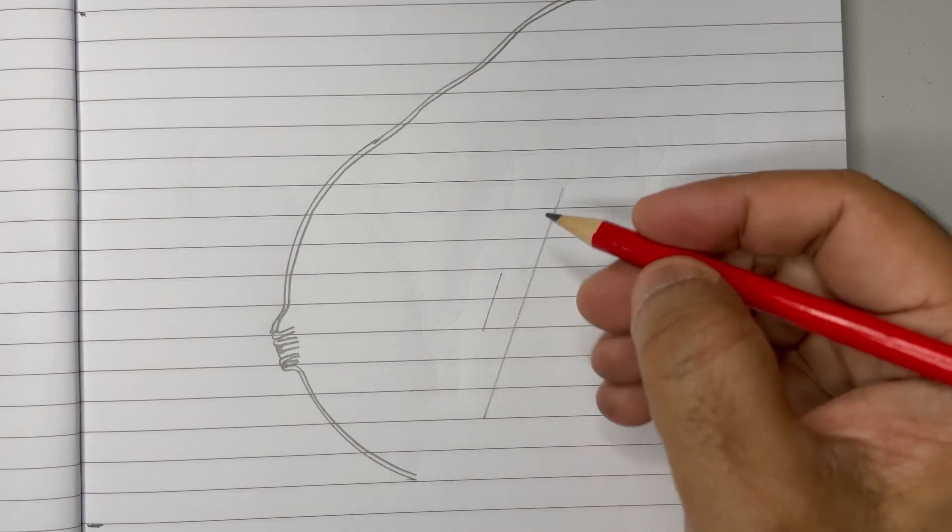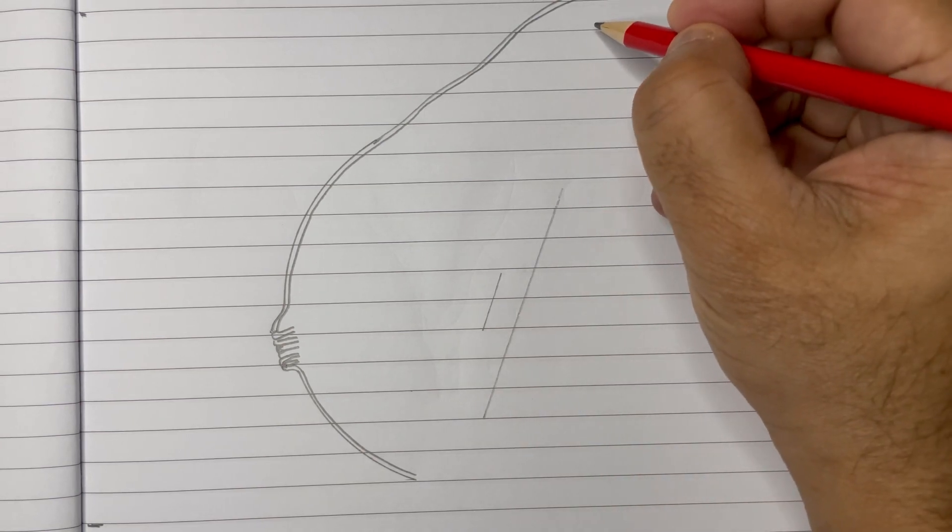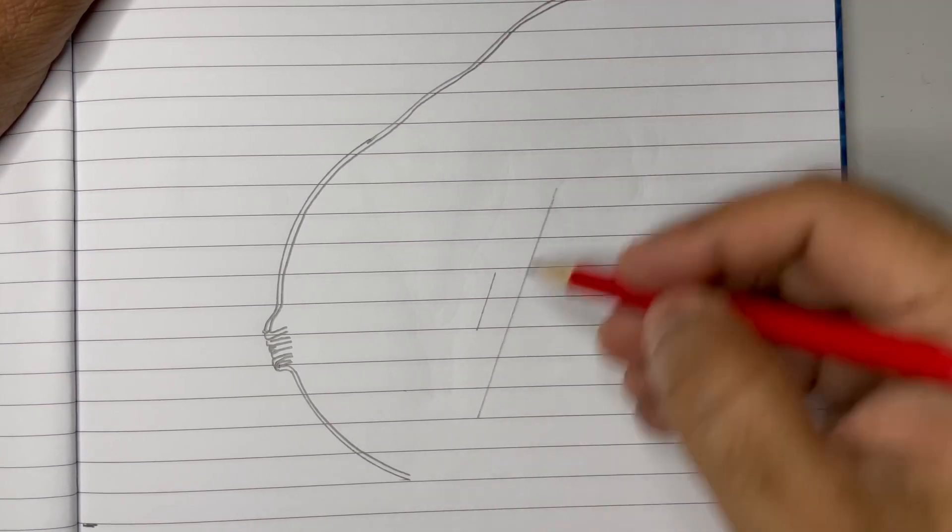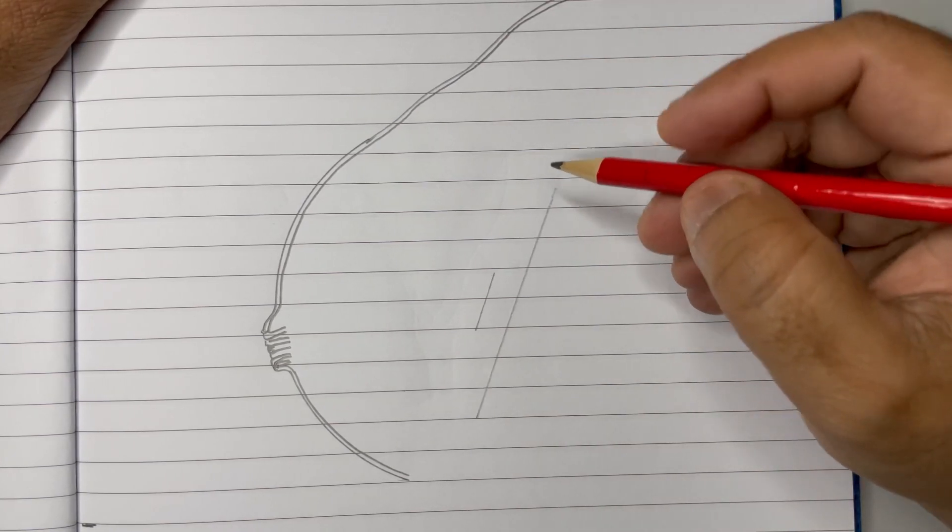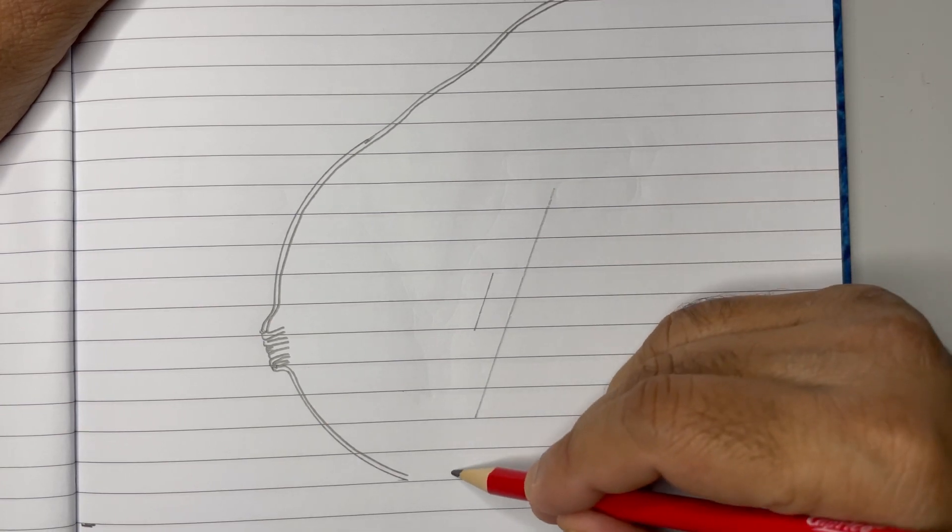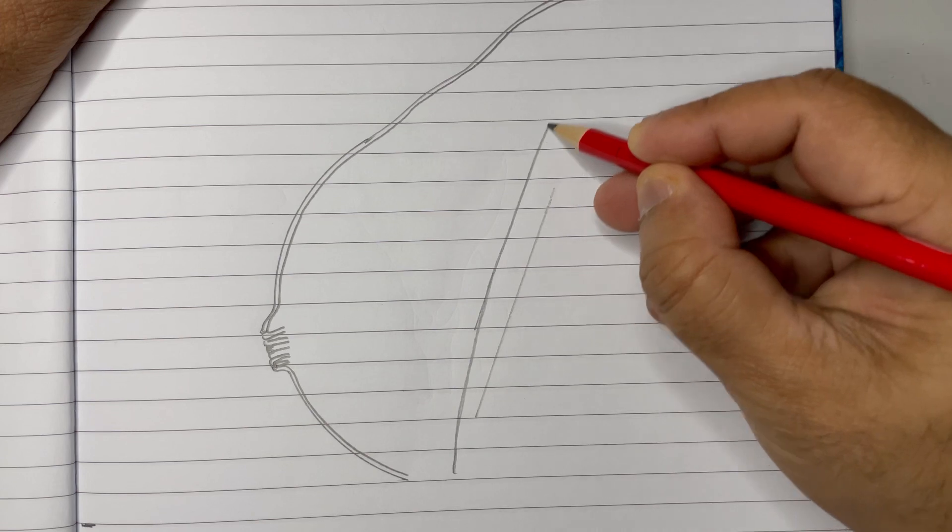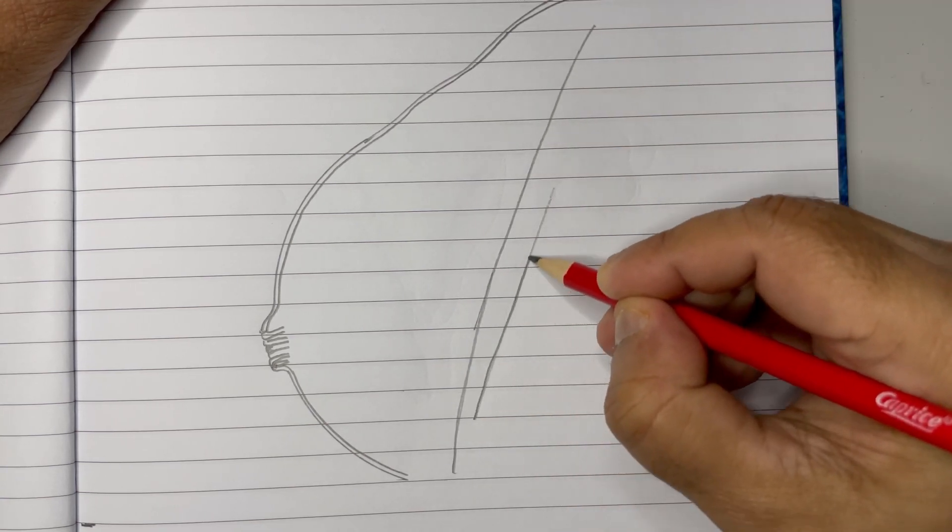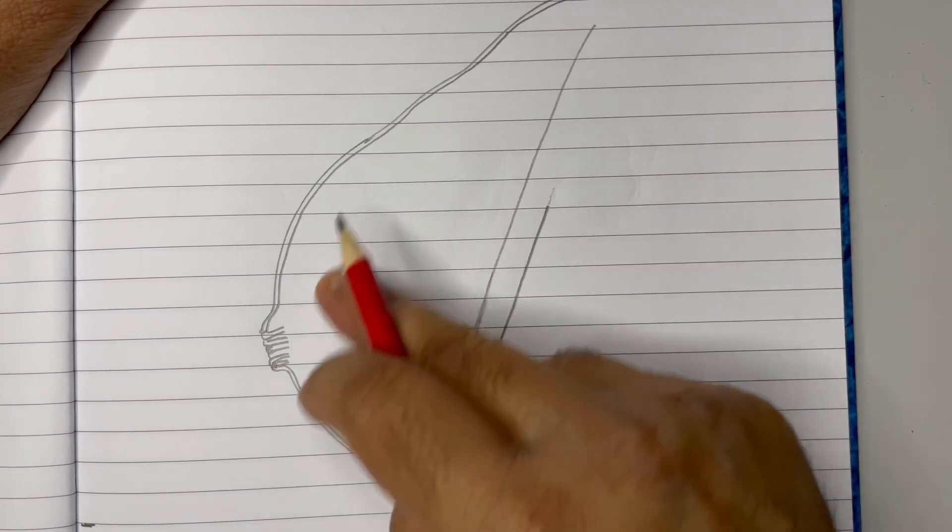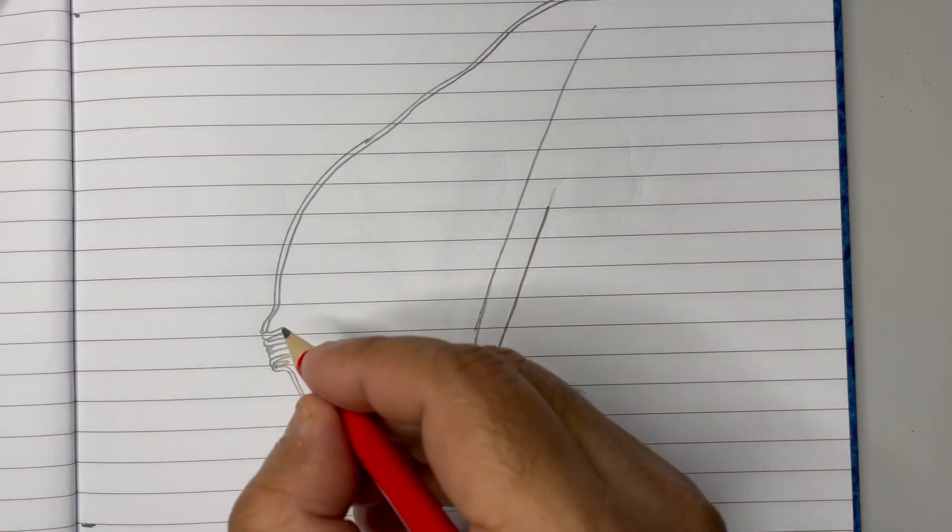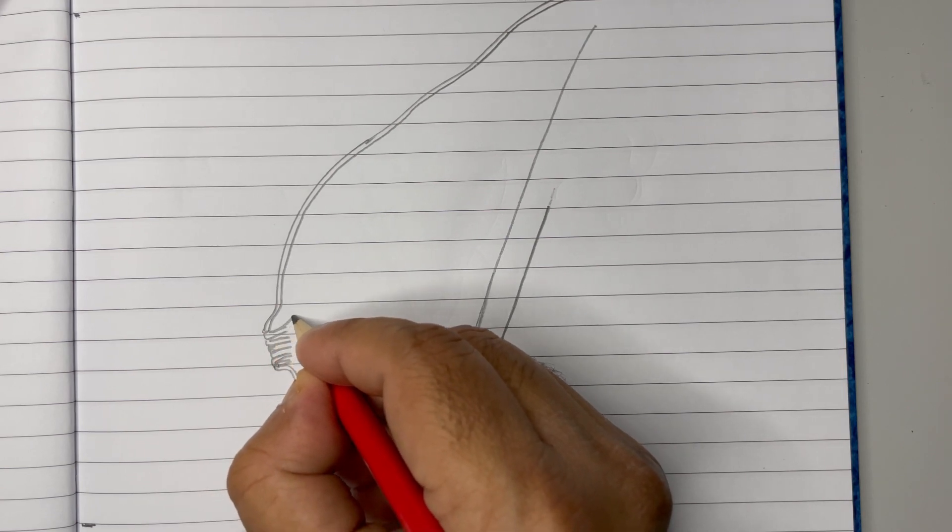From this point, we can draw the body layer. This is the reference layer we drew. From here, draw like this extending till here. This is the area where we are going to draw the remaining structures.